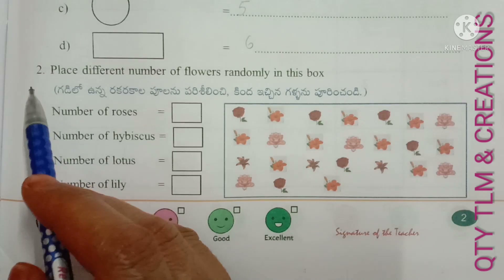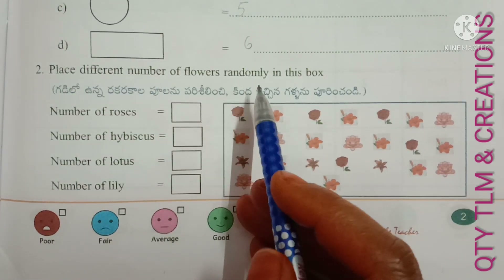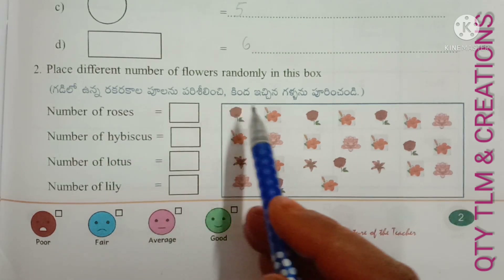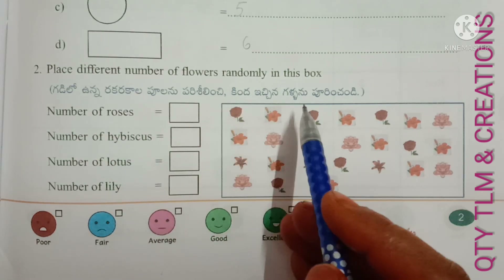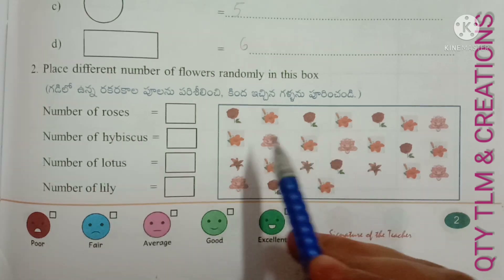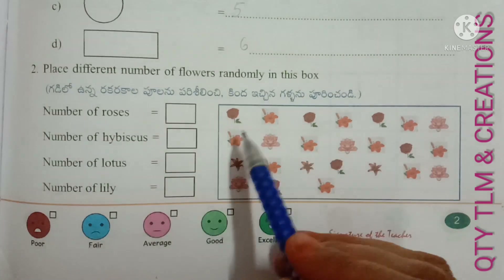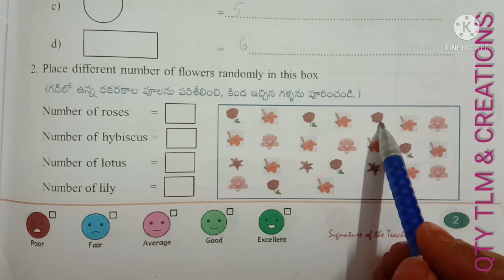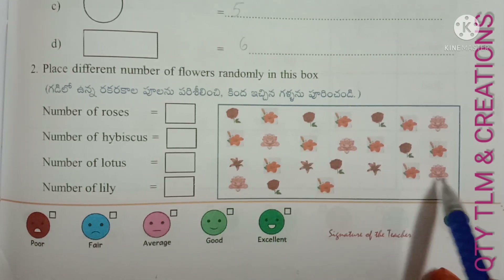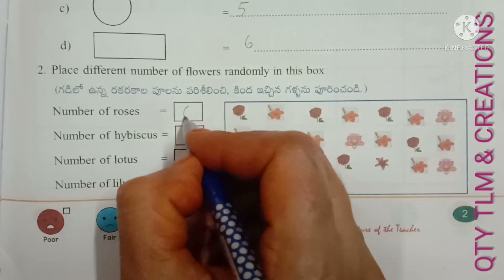Next question. Place different number of flowers randomly in this box. Number of roses — how many roses are there in this box? 1, 2, 3, 4, 5, and 6. So, number of roses are 6.